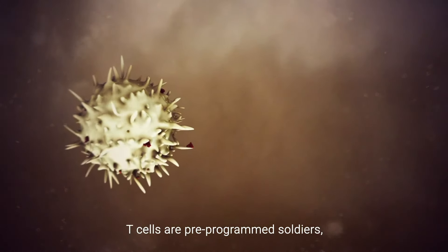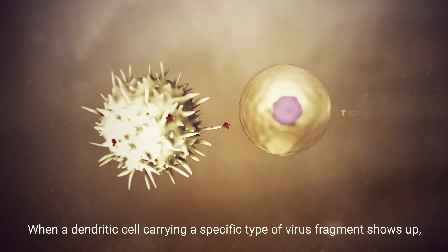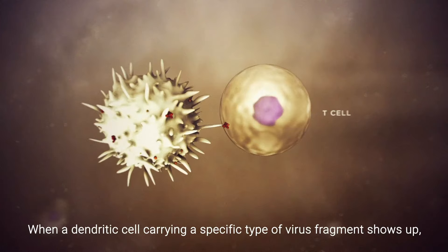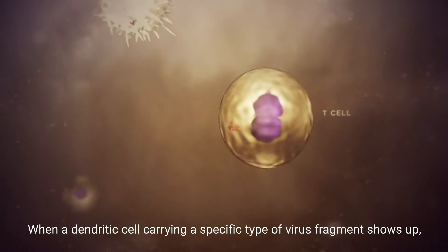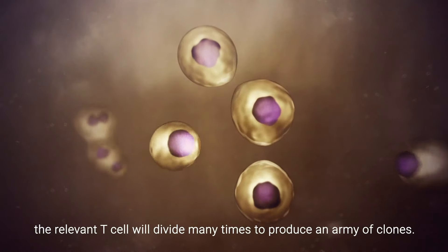T cells are pre-programmed soldiers, each one trained to target a specific invader. When a dendritic cell carrying a specific type of virus fragment shows up, the relevant T cell will divide many times to produce an army of clones.